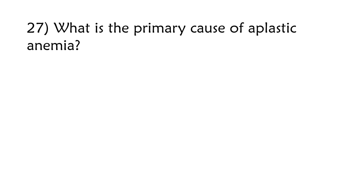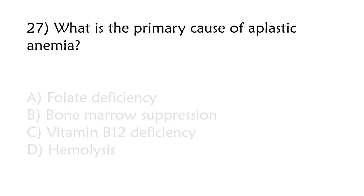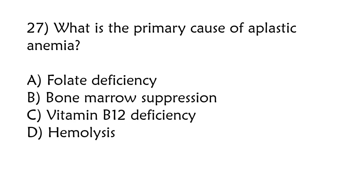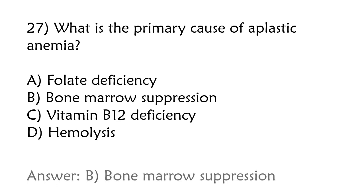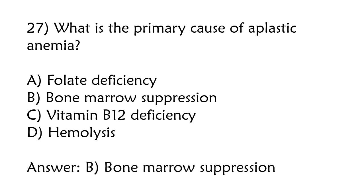What is the primary cause of aplastic anemia? Folate Deficiency, Bone Marrow Suppression, Vitamin B12 Deficiency, Hemolysis. The correct answer is Option B: Bone Marrow Suppression.